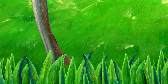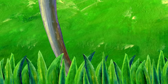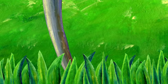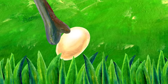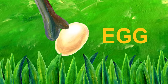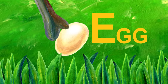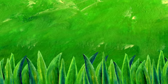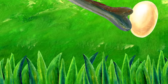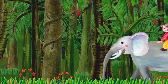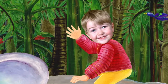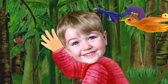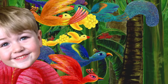The elephant is looking for something. What does he find? It's an egg. Egg starts with E. No, Mr. Elephant, don't eat the egg. Oh, good, Mr. Elephant. Now, who's riding the elephant? Hey, that's me. I'm riding the elephant. Riding the elephant is so much fun.